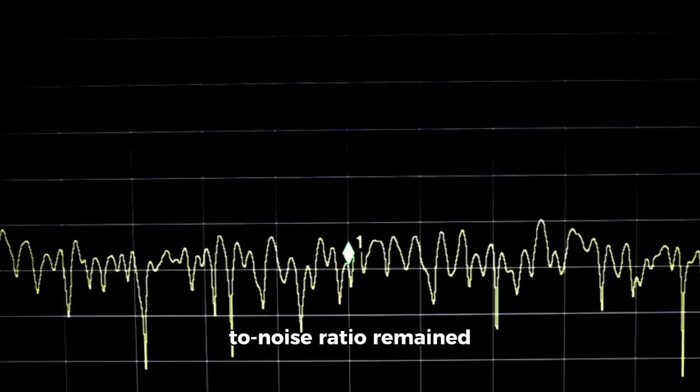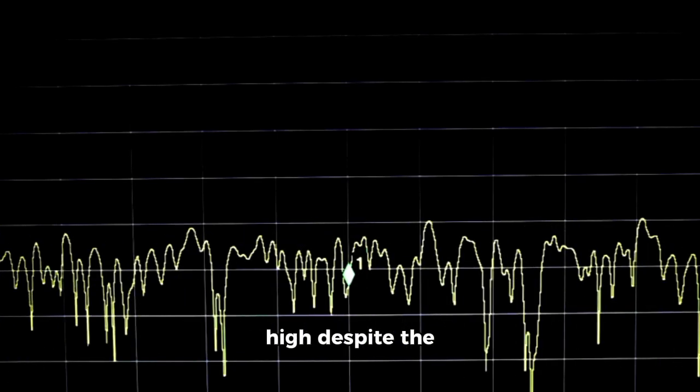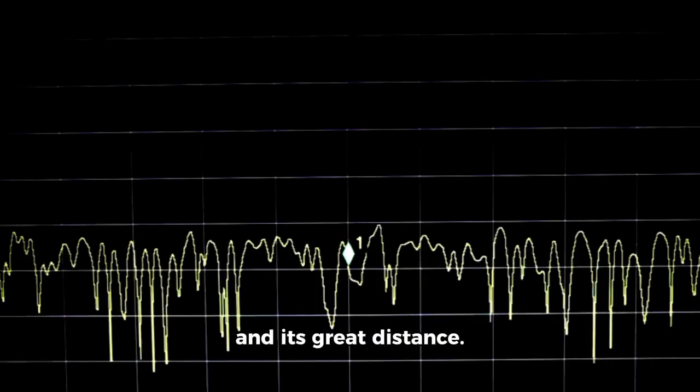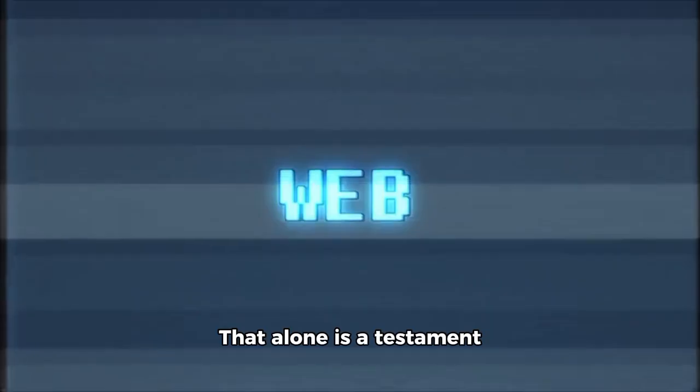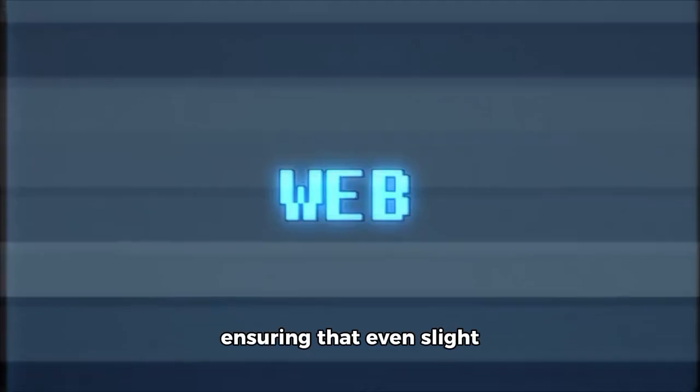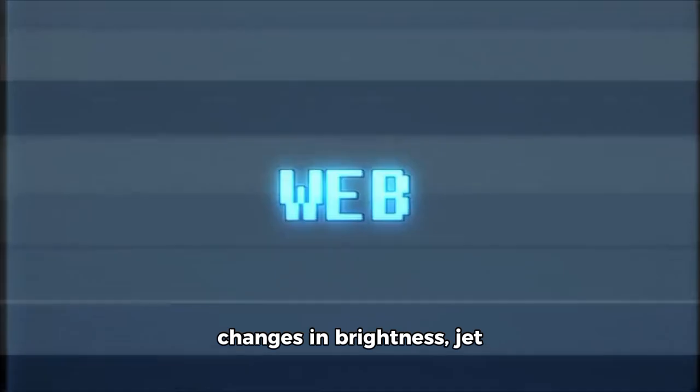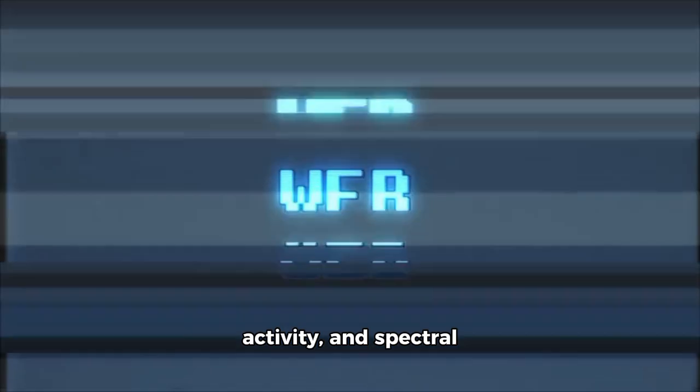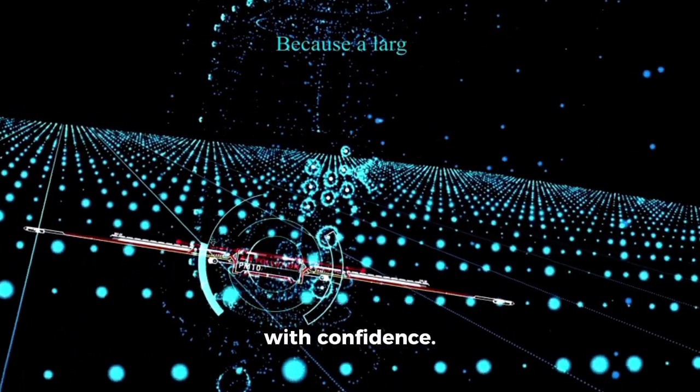Crucially, the signal-to-noise ratio remained high despite the faintness of the object and its great distance. That alone is a testament to Webb's engineering, ensuring that even slight changes in brightness, jet activity, and spectral lines could be tracked with confidence.